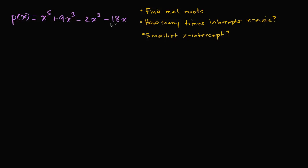So we have a fifth degree polynomial here, p of x, and we're asked to do several things. First, find the real roots. Let's just remind ourselves what roots are. A root is the same thing as a zero, and they're the x values that make the polynomial equal to zero. So the real roots are the x values where p of x is equal to zero — those are the roots, or the zeros.